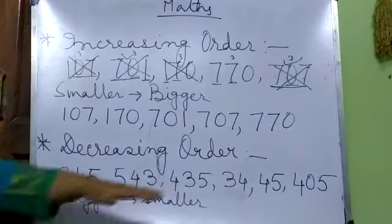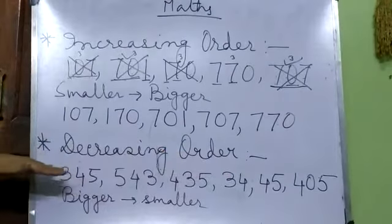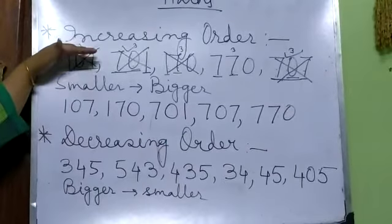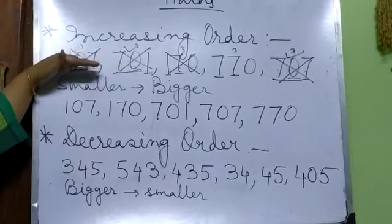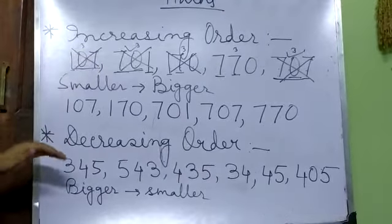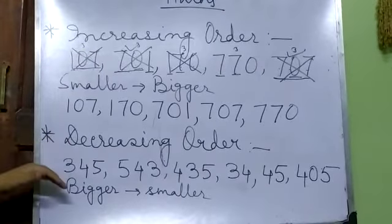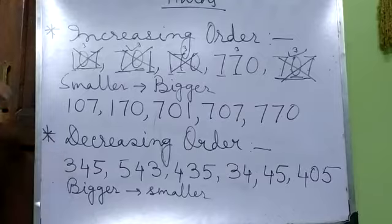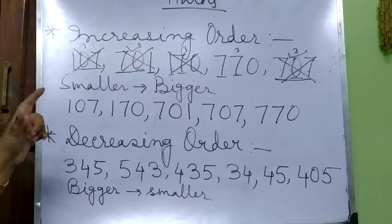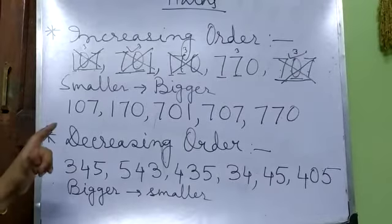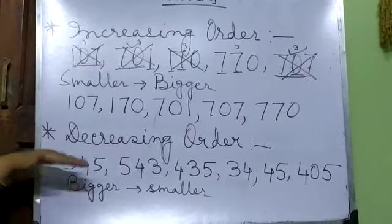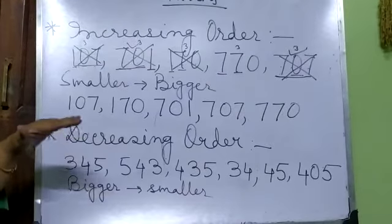Now there are different numbers. This is the same as increasing order. First we have to find out the bigger number. For that we have to count the digits of each number.